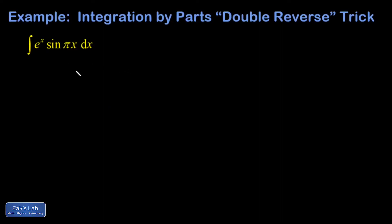This is an example of what I like to call the double reverse trick for integration by parts. The whole problem here is that in integration by parts, the formula that we're trying to use is like this.